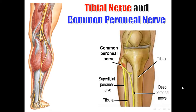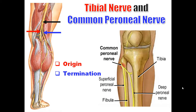Now we will talk about the two terminal branches of the sciatic nerve: the tibial nerve and the common peroneal nerve. The tibial nerve is the medial one; the common peroneal nerve is the lateral one. They both originate in the middle of the back of the thigh. The tibial nerve terminates deep to the flexor retinaculum by dividing into medial and lateral plantar nerves. The common peroneal nerve terminates on the lateral side of the neck of the fibula by dividing into the deep peroneal nerve and the superficial peroneal nerve.